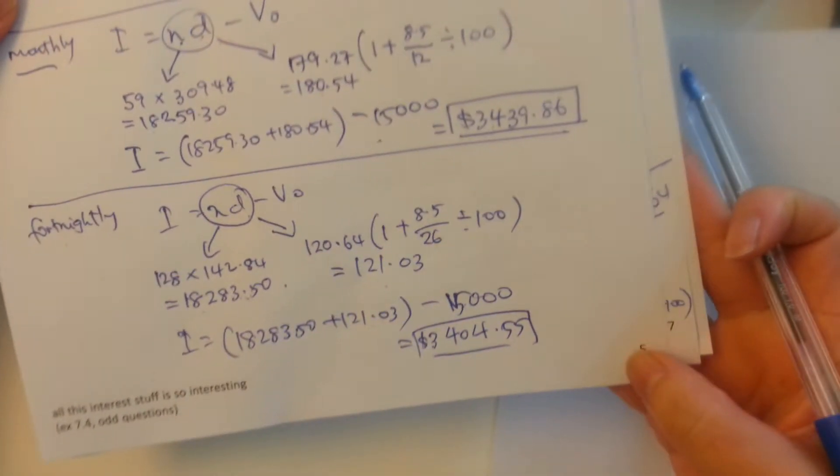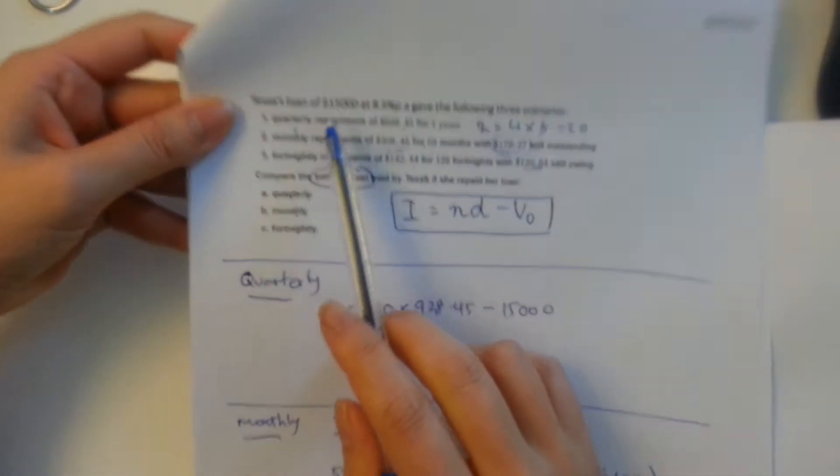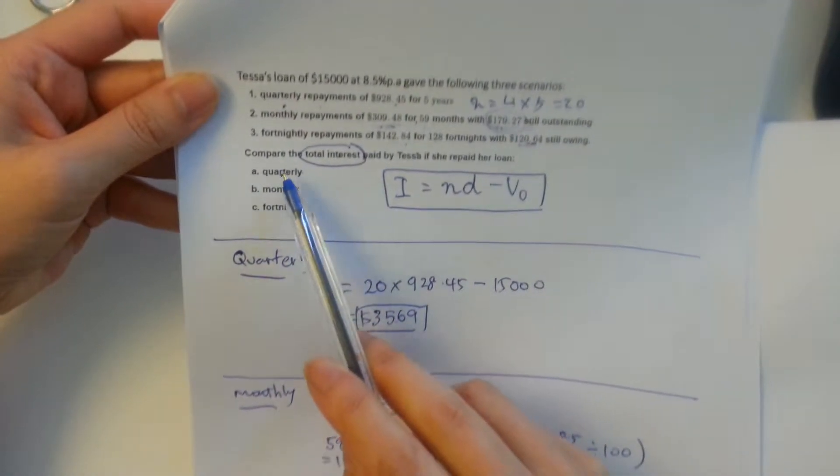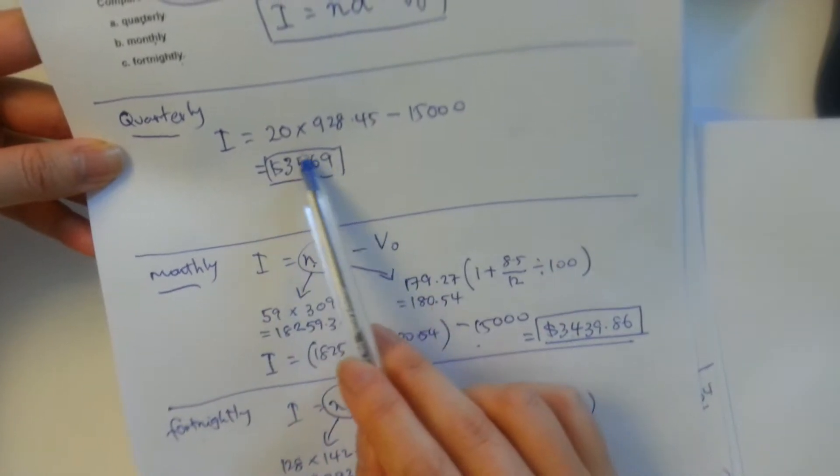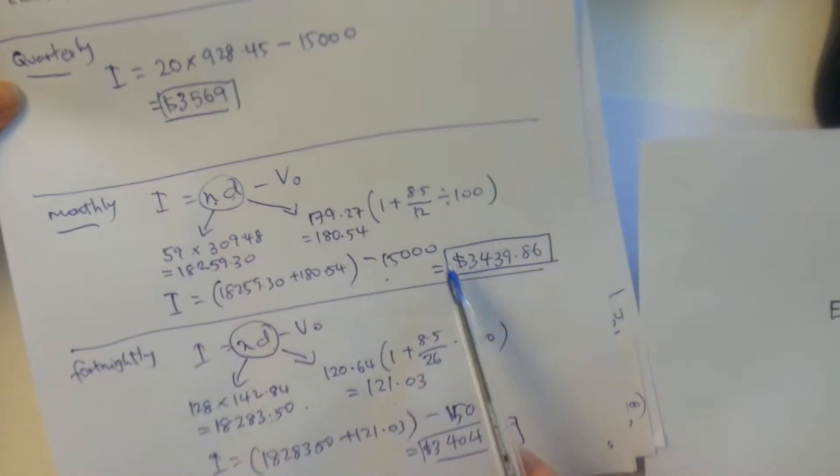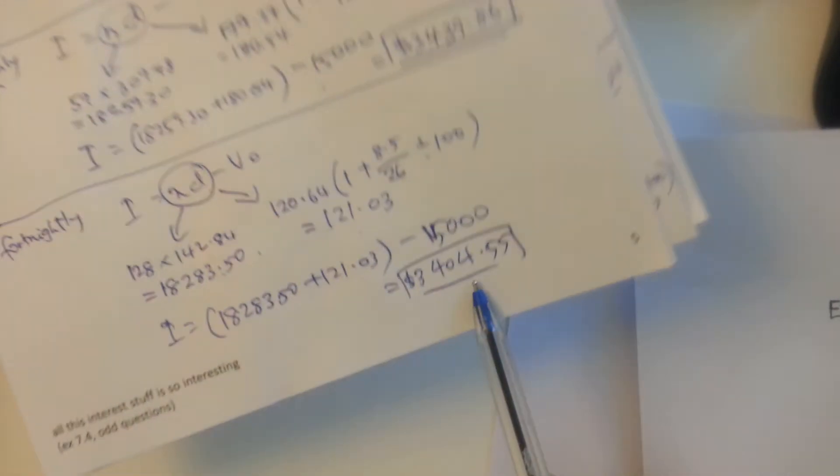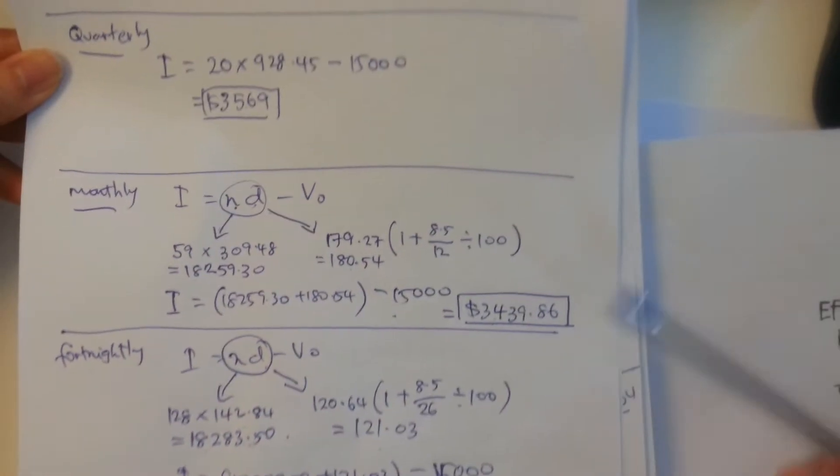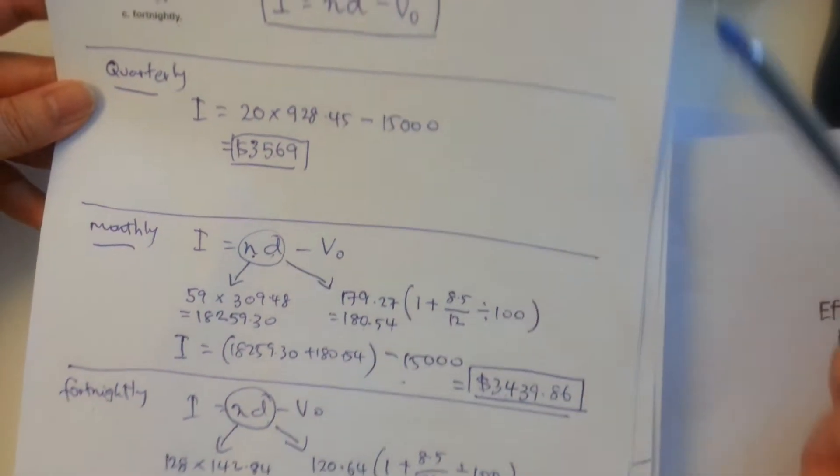So in this example on page number five, remember how we calculated the same loan under different terms: quarterly, monthly and fortnightly. Quarterly gave an interest amount of this, monthly gave a lower amount of interest, and fortnightly gave even a lower amount of interest because when you increase the frequency of payments, you are effectively reducing the amount of interest that you need to pay.